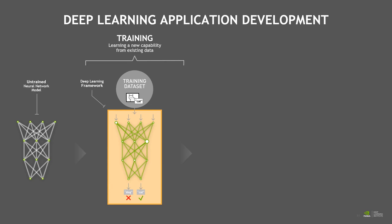For each image that is processed through the neural network, each node in the output layer reports a number indicating how confident it is that the image is a cat or a dog. The deep learning framework then looks at the label you provided for the image to determine whether the neural network inferred the correct answer. If it inferred correctly, the framework strengthens the weights of the connections that contributed to getting the correct answer. And if the neural network inferred the incorrect result, the framework reduces the weights of those connections. After processing the entire training data set once, the neural network will generally have enough experience to infer the correct answer a little more than half of the time. It will require several additional rounds, or epochs, of processing the entire training data set to achieve higher levels of accuracy.